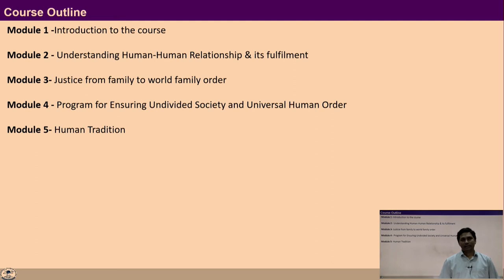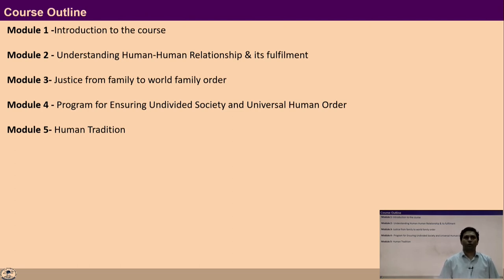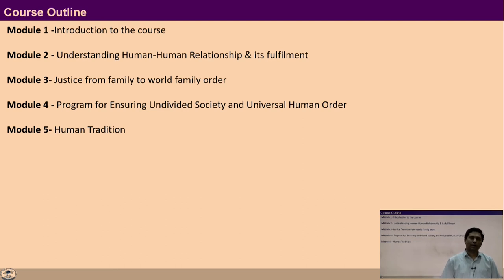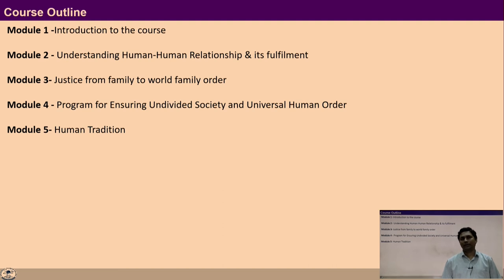So we can say that the whole course can be divided into five modules. In module 1 we will introduce the course and the need of the course. Module 2 discusses about human-human relationship and its fulfillment. Module 3 is an extension of module 2 where we will talk about relationship from family to world family order. Then in module 4 we will discuss about undivided society, universal human order, and finally in module 5 we will talk about human tradition.